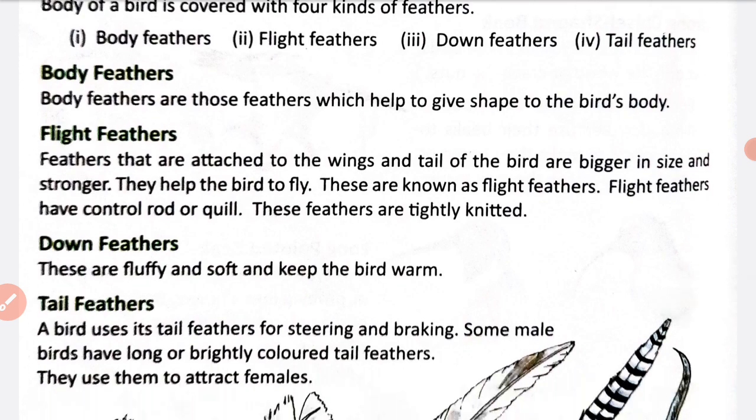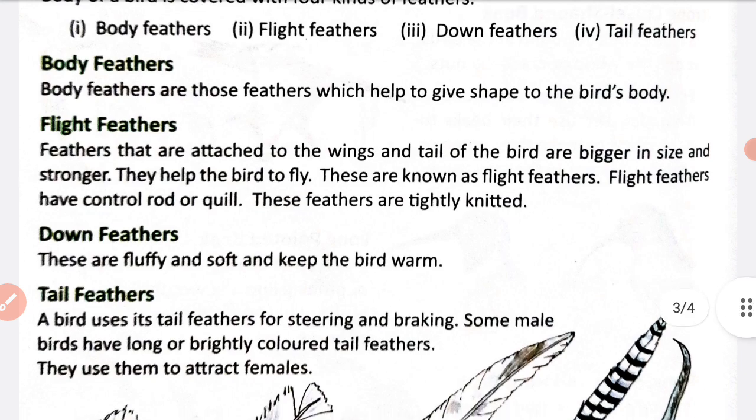The first type of feathers is body feathers. Body feathers are those feathers which help to give shape to the bird's body. Yeh feathers bird ki body ko shape dete hain. Yeh feathers kahlate hain body feathers, jo ki birds ki body ko shape dete hain.